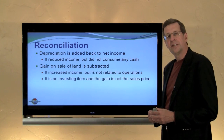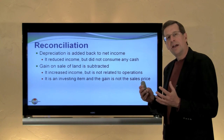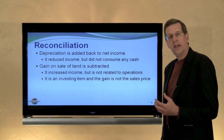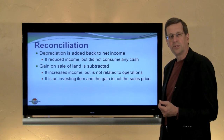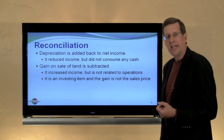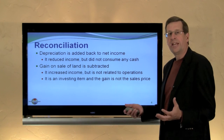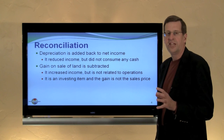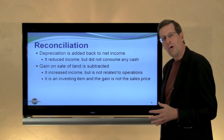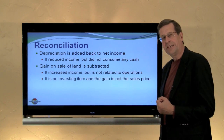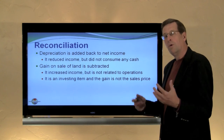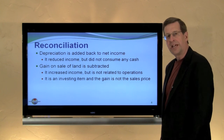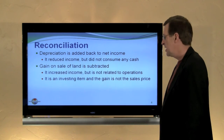Consider this: if you sold your car for $10,000 and your car had a cost of $7,000, you would have had a $3,000 gain on that car, but it would have generated $10,000 of cash. All you want to measure in the cash flow statement is a total of $10,000, reported in the cash flows from investing activities as a $10,000 inflow. We would not also want to include the gain in the operating activity section because we would be essentially double counting part of the transaction.